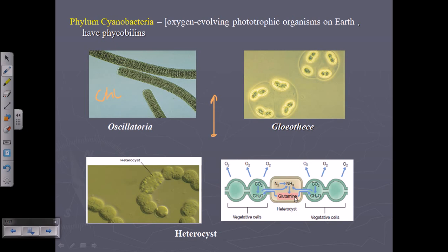Cyanobacteria can also fix nitrogen. They take nitrogen from the environment and produce ammonia or inorganic compounds, which are then incorporated to make the amino acid glutamine. Nearby cells can take this amino acid from the nitrogen-fixing cells. Cyanobacteria can be found in different shapes and sizes — as colonies, scattered individually, circular, oval-shaped, or in fibrillar structures.